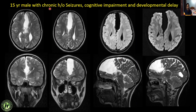Next: a 15-year male with chronic seizures, cognitive impairment, and developmental delay. There is a defect in the falx, a cystic lesion in the parafalcine location, classical teardrop configuration of the frontal horns suggestive of corpus callosal agenesis, widening and diverging frontal horns, and interdigitating abnormal gray-white matter. The corpus callosum is not clearly visualized on sagittal sections. This is a case of corpus callosal agenesis with a large interhemispheric cyst.